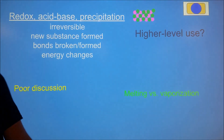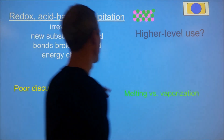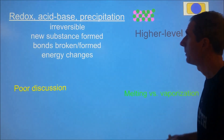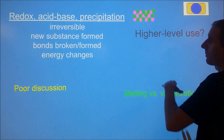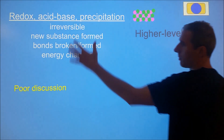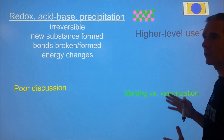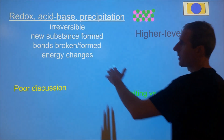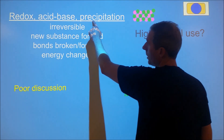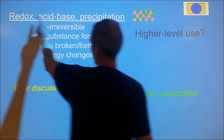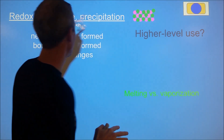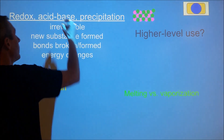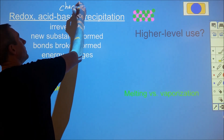When we talk about physical and chemical changes, typically what people are doing is separating out chemical reactions from any other change of substances. How do they distinguish that? They don't highlight that there are three different types of chemical reactions that all involve charged particles.